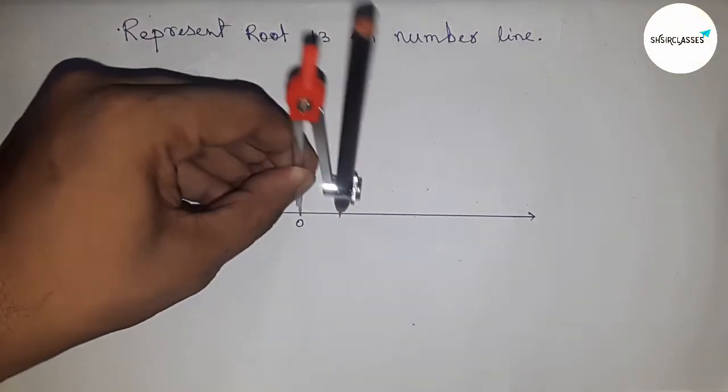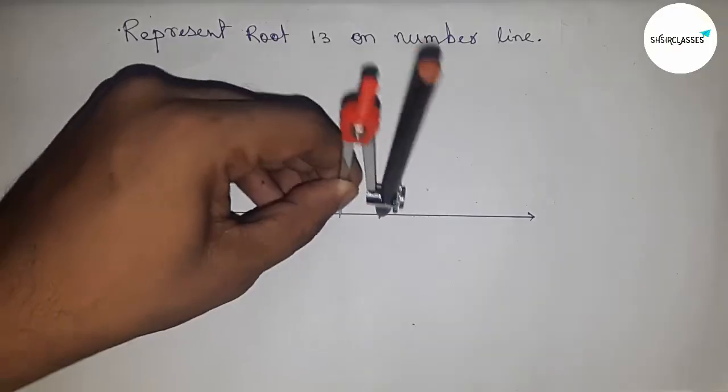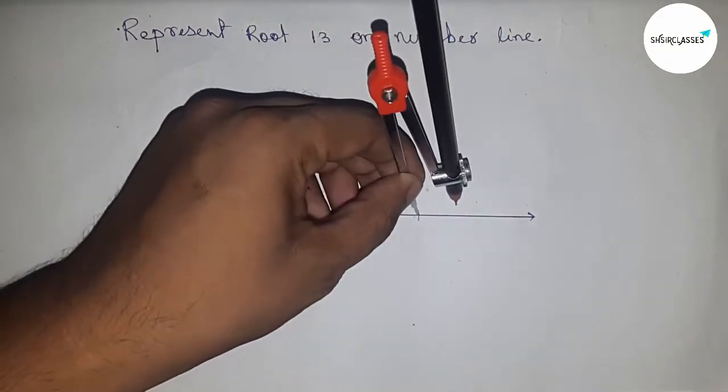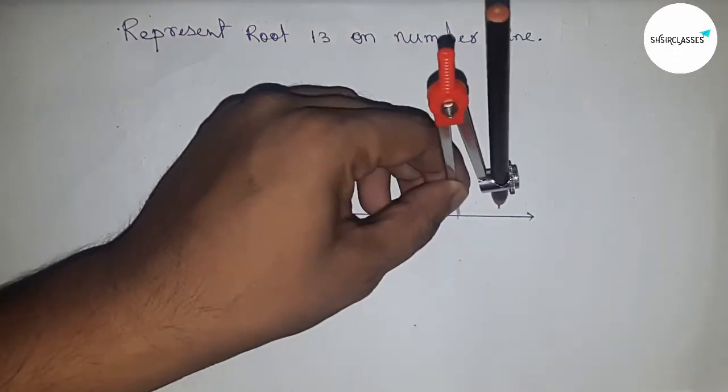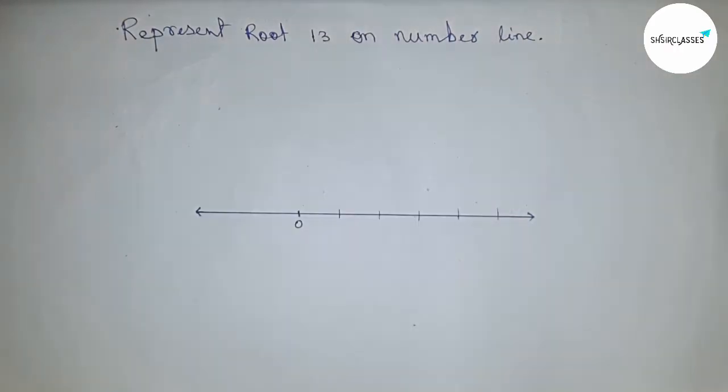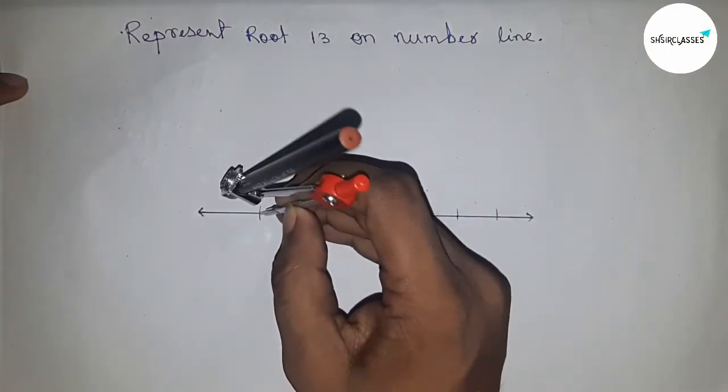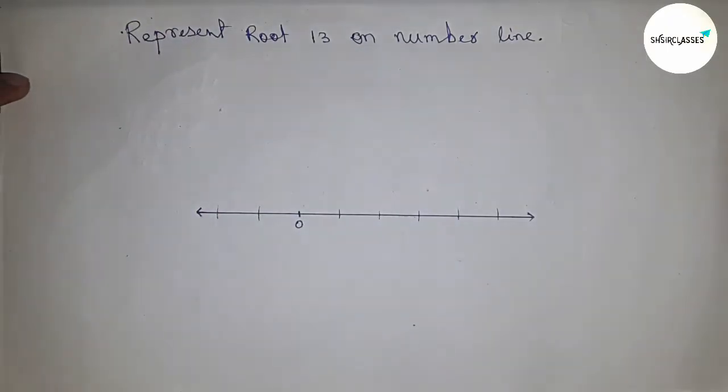Next, I'm going to use a compass to write down all the numbers on the line. Take any radius and cut the line. You can use a scale to write down all the numbers on the line, but I think a compass is better.